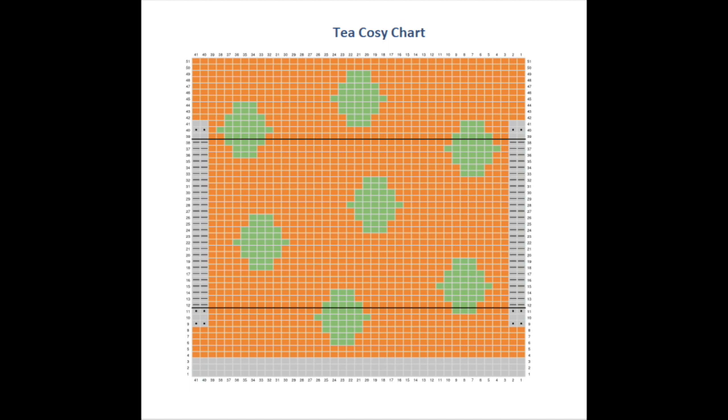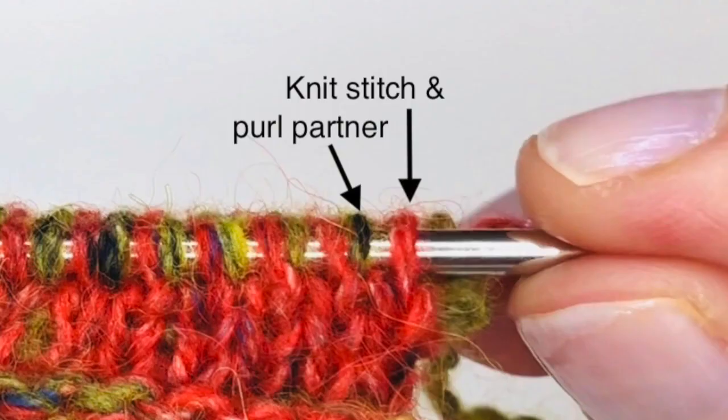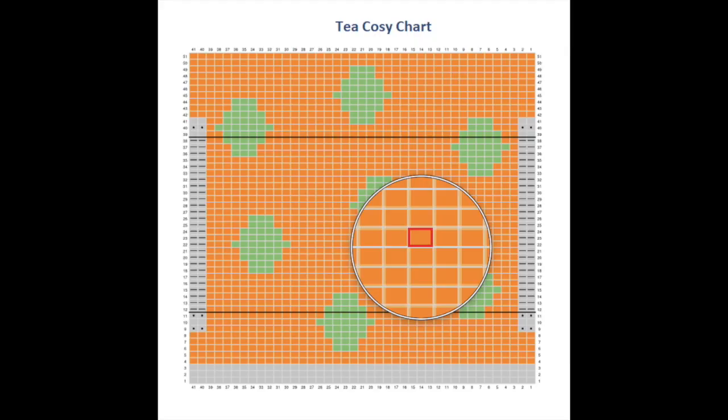Each square of the chart in a normal situation would represent a stitch. We're now getting into the specifics of double knitting charts, because on double knitting charts each square represents not just the stitch but its partner. Remember, everything in double knitting works with a partner — every stitch you make, you have to make its partner stitch as well. So when you're looking at that square, you're not just looking at one stitch, you're looking at a stitch and its partner.